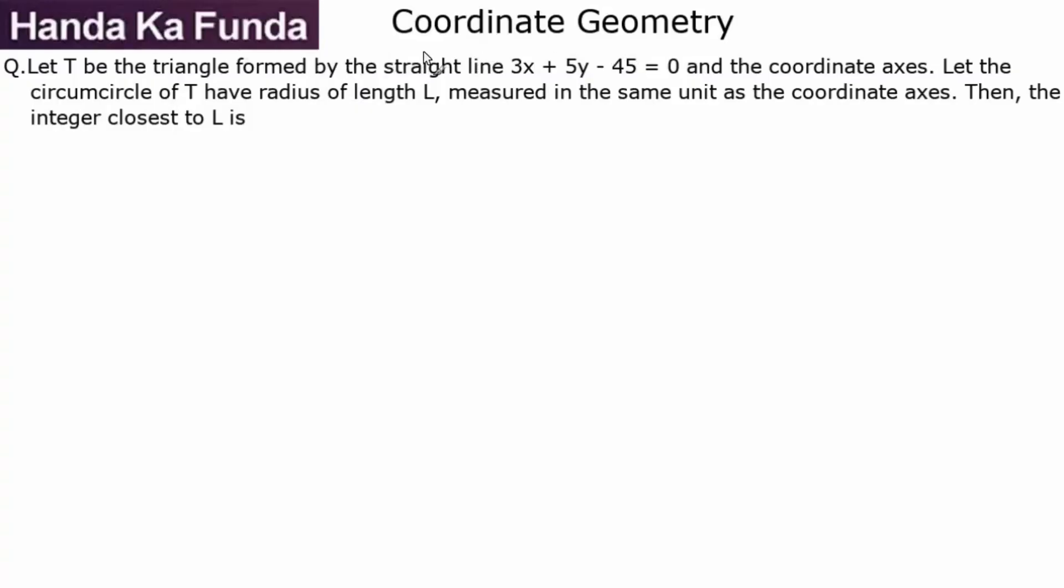Hi everyone, I'm Ravi Handa. Welcome to another question on coordinate geometry. In this question, we are given let T be a triangle formed by the straight line 3x + 5y - 45 = 0 and the coordinate axes.